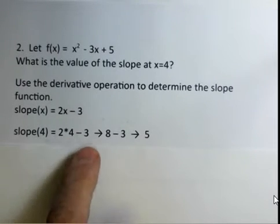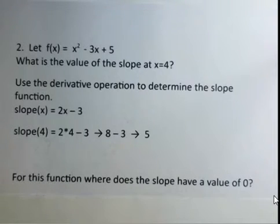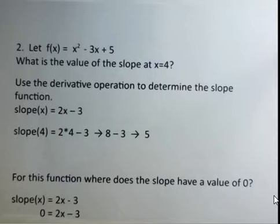Where does this function have a slope value equal to 0? We use the slope function, so we put in 0: 0 = 2x - 3. Then I solve this: add 3 to both sides, divide by 2, and we get 3/2. Calculus tells us that the slope has a 0 at x = 1.5.